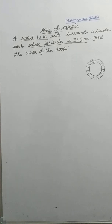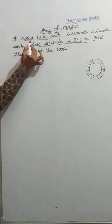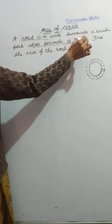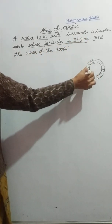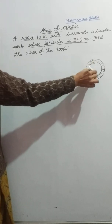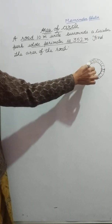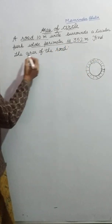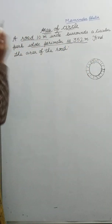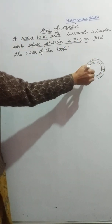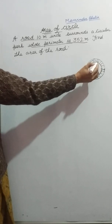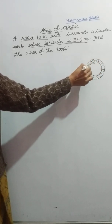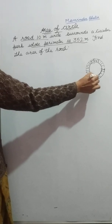Hello guys, welcome back to my channel with another video on the topic area of circle. Our question is: a road 10 meter wide surrounds a circular park whose perimeter is 352 meter. This is my circular park, and this road surrounds this park. We have to find out the area of this road.